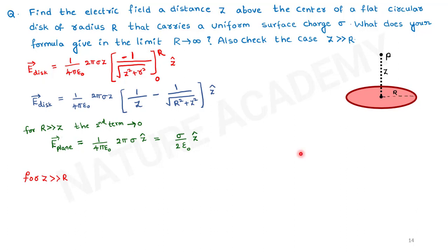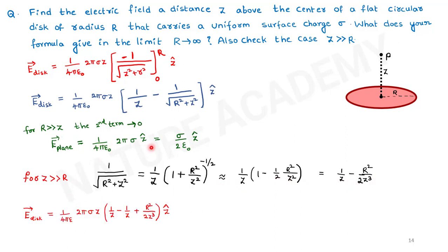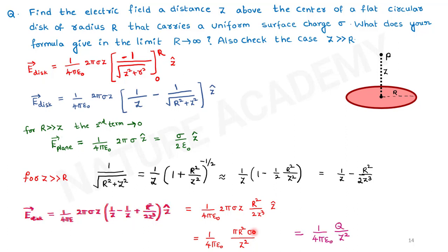When R >> z (disk extends to infinity, becoming an infinite plane), the second term goes to zero and the field becomes 1 over 4π epsilon-naught times 2π sigma z-cap, which equals sigma over 2 epsilon-naught times z-cap. When z >> R (viewing from far away), using the approximation 1 over the square root of R-squared plus z-squared ≈ 1/z minus R-squared over 2z-cubed, the field reduces to 1 over 4π epsilon-naught times Q over z-squared, consistent with a point charge.